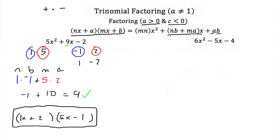Let's try this again. We have 6x squared minus 5x minus 4. My a is positive, so I'm only going to consider positive factors of my leading coefficient — in this case, 1 and 6, and 2 and 3. Now my constant term is negative, and to get a negative constant term, you have to multiply a positive and negative number together. So to get negative 4, I can do that with negative 1 and 4, 1 and negative 4, and 2 and negative 2. So I need to find combinations of numbers that will add together to get negative 5, continuing to check different combinations until I find one.